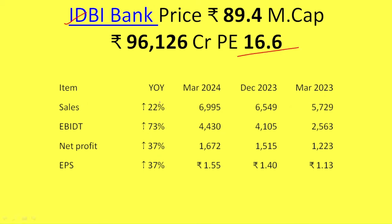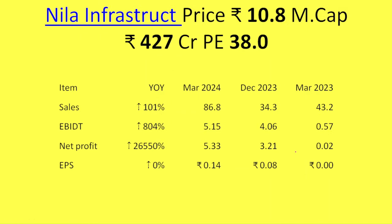Next, the stock is IDBI Bank. The stock P.E. is around 26% of the stock, and the net profit is 37%. Next, the stock is Nila Infrastructure. The stock P.E. is 30%.